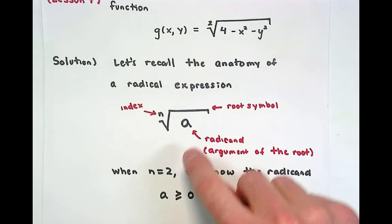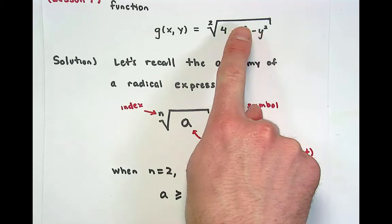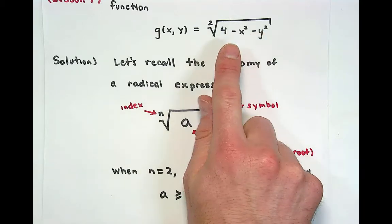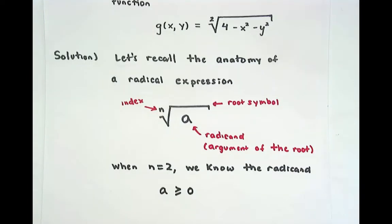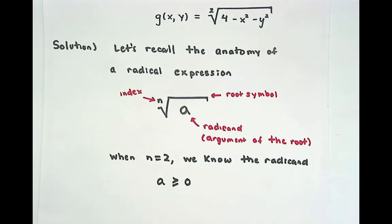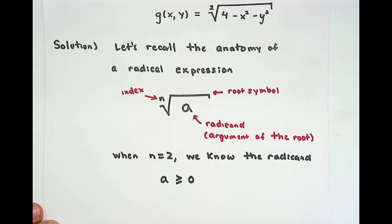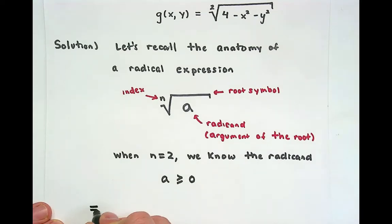When you take the square root of something, the only way that makes sense in the real numbers is if the radicand is positive. Of course, there's something called complex analysis, which is just so beautiful, but that's outside the scope of this class.